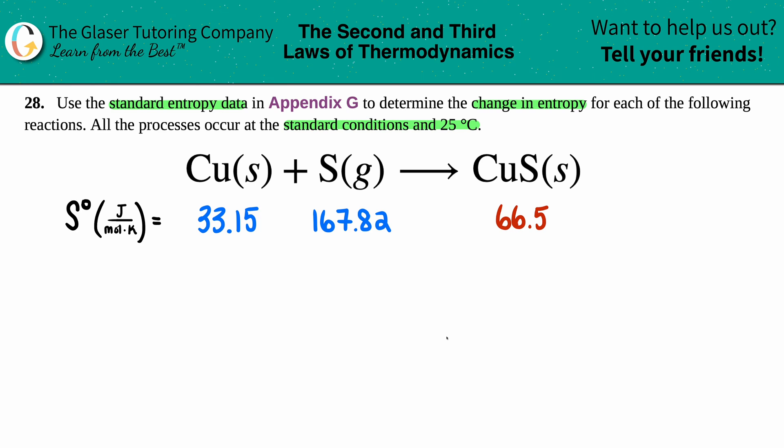So we have our balanced equation here: copper solid plus sulfur gas, which will give us CuS solid.